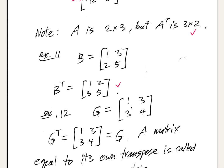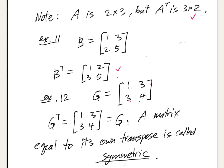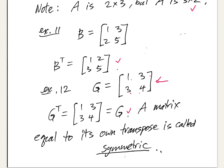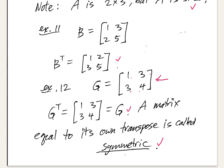For matrix G = [1, 3 / 3, 4], taking its transpose — first row 1, 3 becomes the first column, then 3, 4 written up and down — gives the same matrix as G. So G equals its own transpose. A matrix equal to its own transpose is called symmetric, and these are very significant in linear algebra. Coming up next is matrix multiplication — a less intuitive and less easy operation.